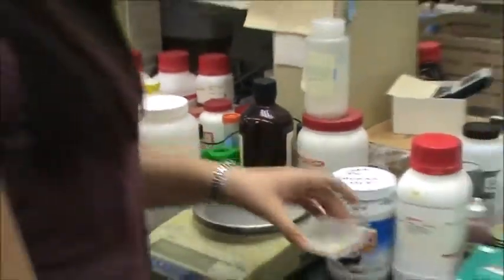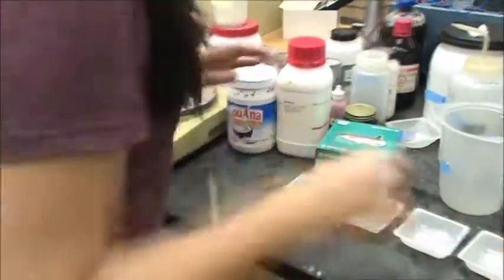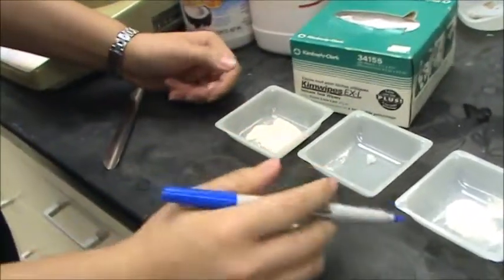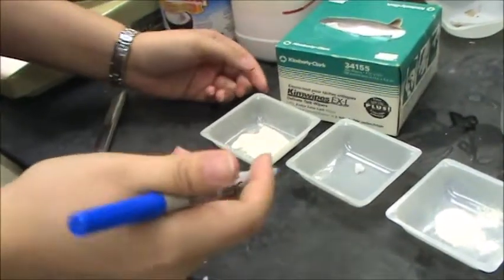So after you measure all your ingredients out, the best thing to do is to label just to make sure you don't get them confused because as you can see we have two different forms of agar, but they're different measurements.